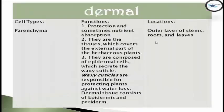The second system is the dermal system. The cell type is parenchyma. It has three major functions: the first function is for protection and sometimes nutrient absorption. It is also the tissue which covers the external part of herbaceous plants, and it can be composed of epidermal cells secreted with a waxy cuticle, which is responsible for protecting plants against water loss. Dermal tissue consists of epidermis and periderm, and is found in the outer layer of stems, roots, and leaves.